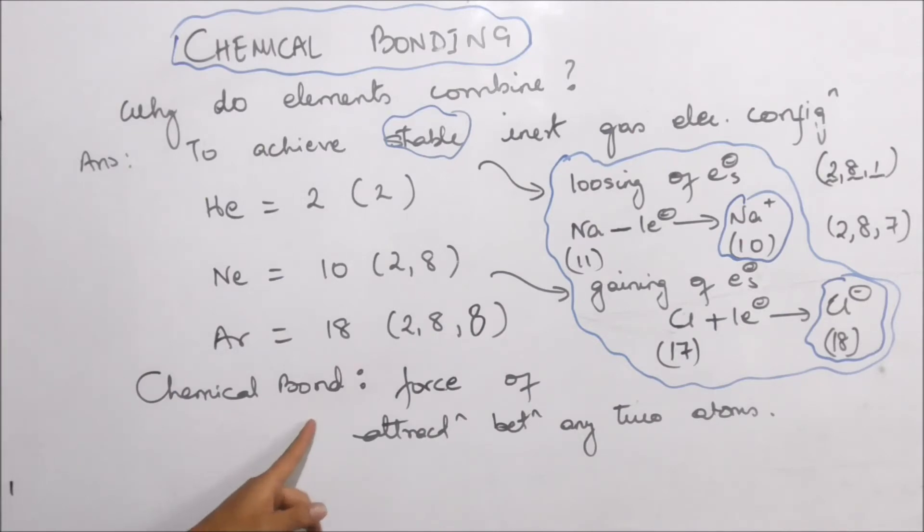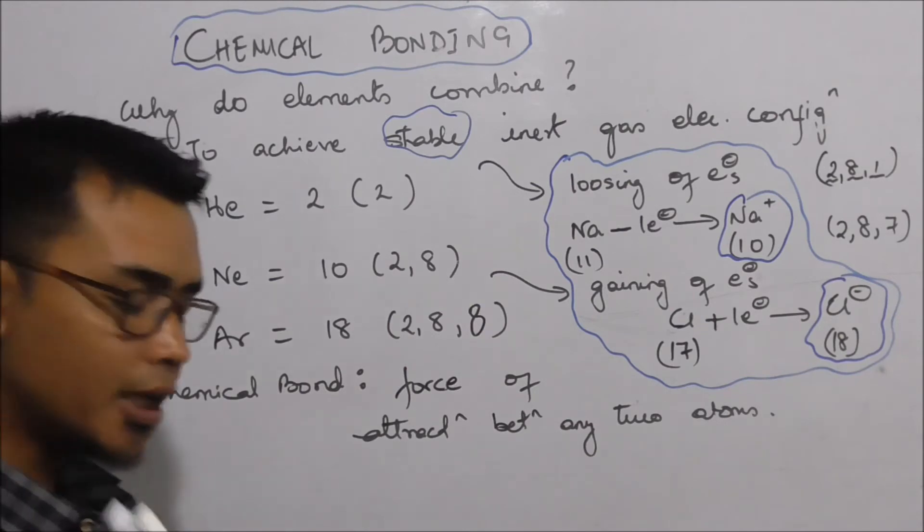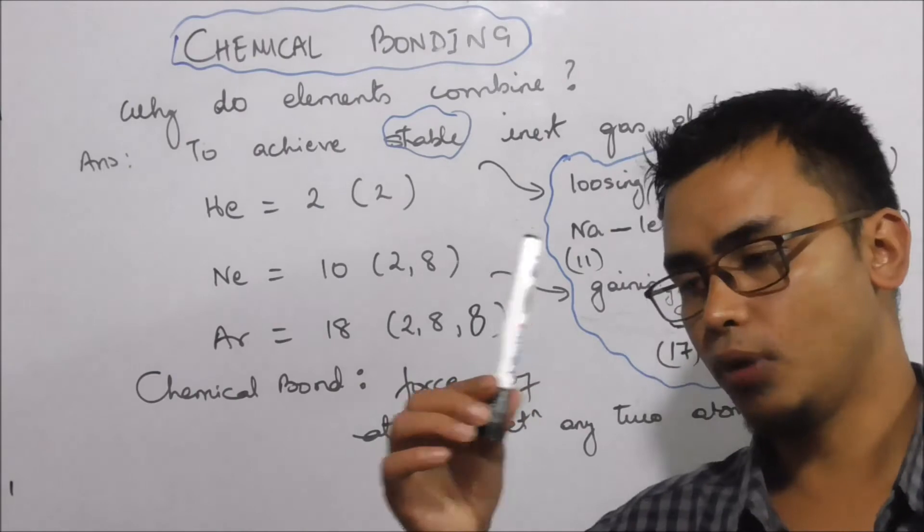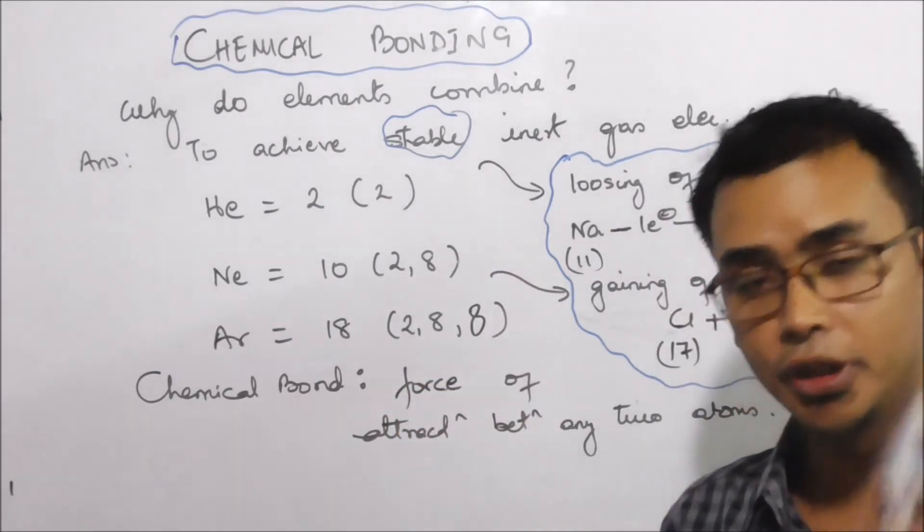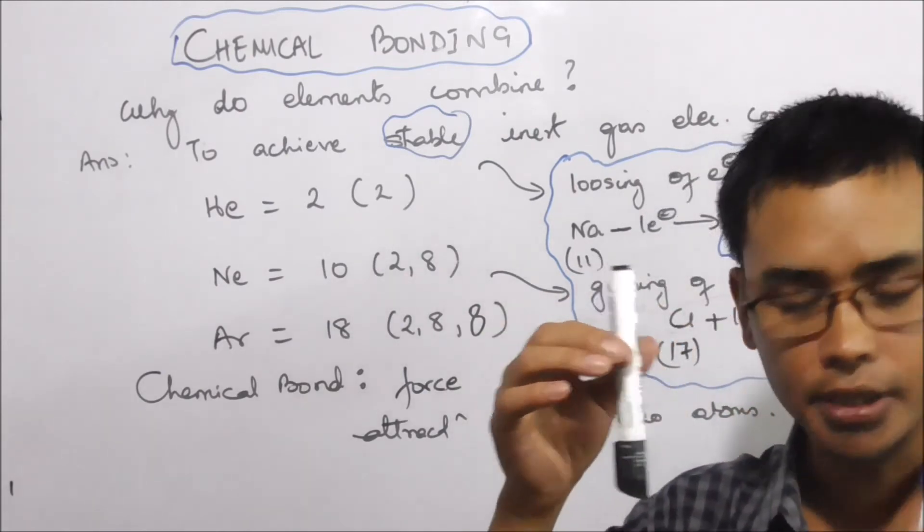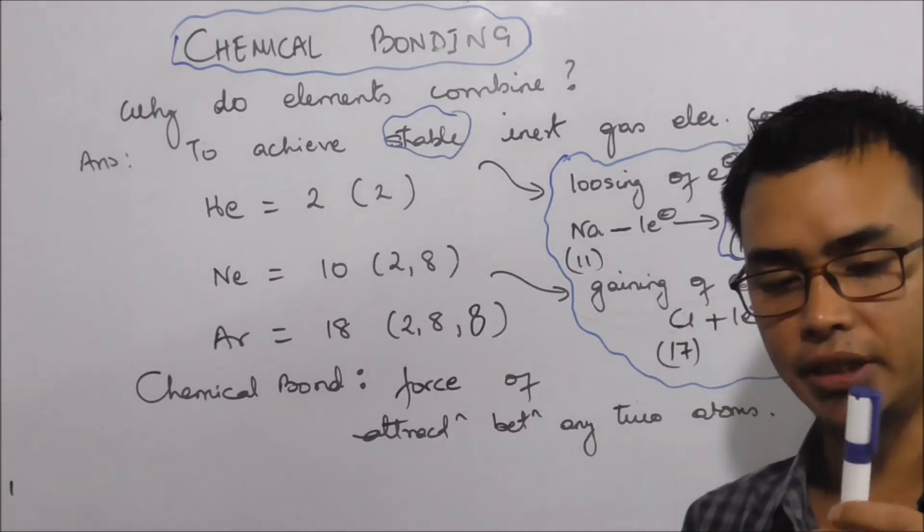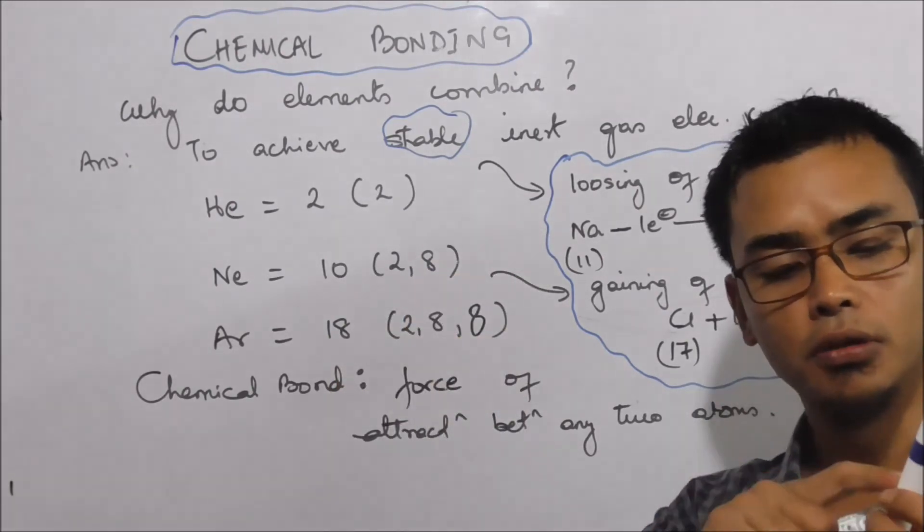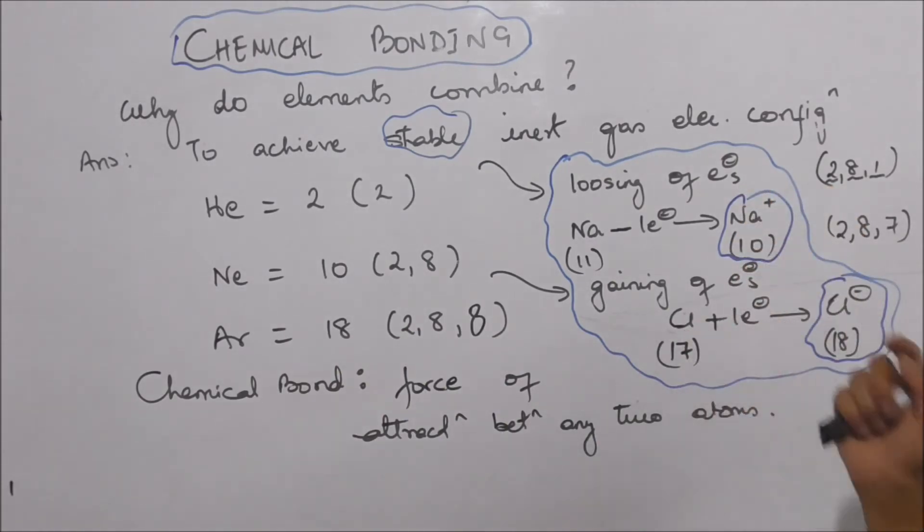Chemical bond is defined by force of attraction between any two atoms. When sodium loses electrons to become Na+ and chlorine gains electrons to become Cl-, both have stable configurations with 2 and 8 electrons. But the nucleus is positively charged.